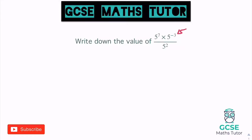So on the top, I'm going to tidy that up. We've got five to the power of — I'm going to do the working out to the side because we're going to add these powers together. The first power is seven, and I'm going to add to that the second power, which is negative three. When we've got adding a negative, that's the same as taking away.